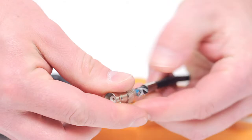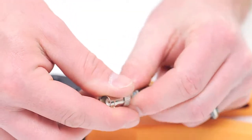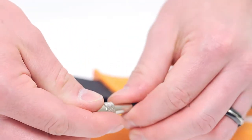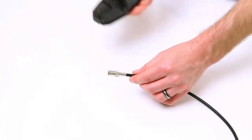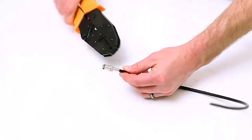Slide the ferrule back over the jacket making sure it folds the braid onto the connector. Take your crimp tool and crimp the ferrule onto the jacket. This will create a secure connection.